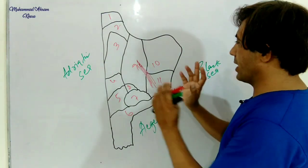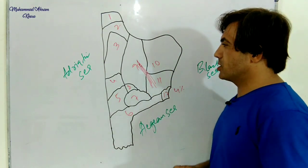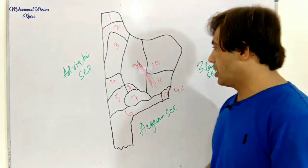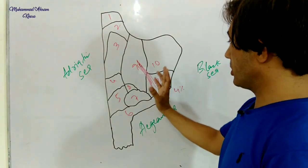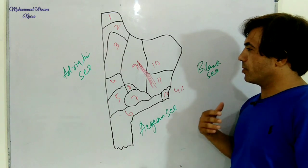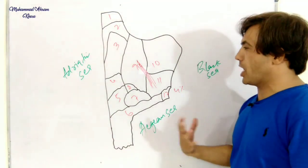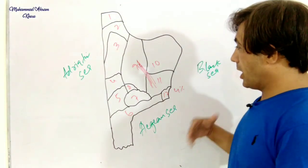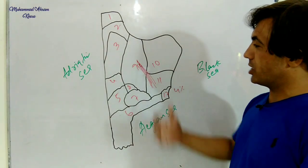This is the map that you must know because you can use this map in your IR or political science. The Non-Aligned Movement was made in Belgrade.